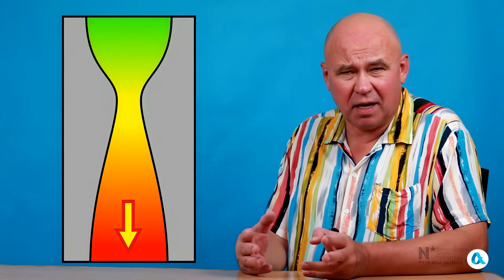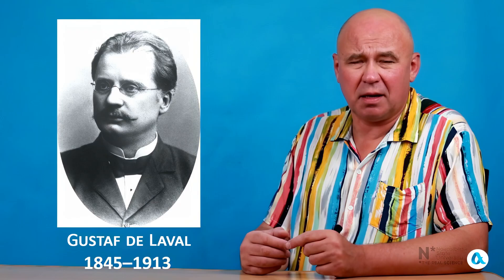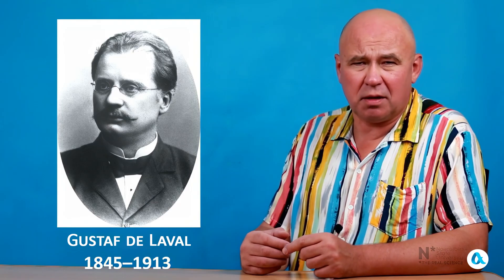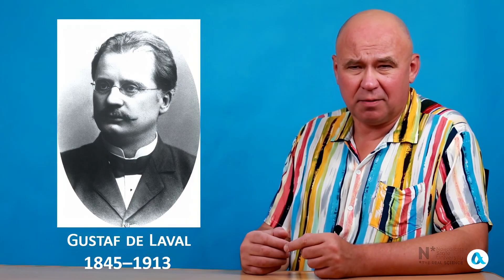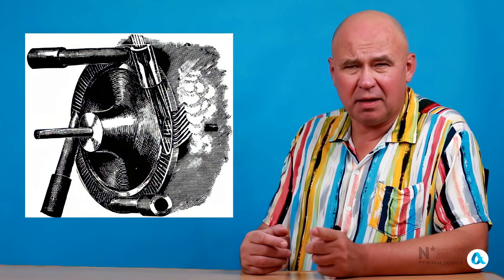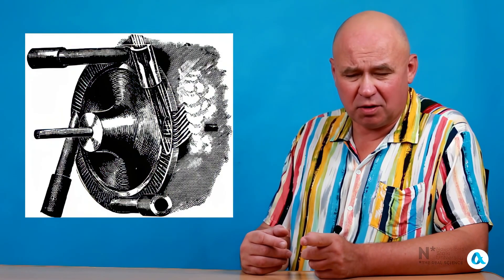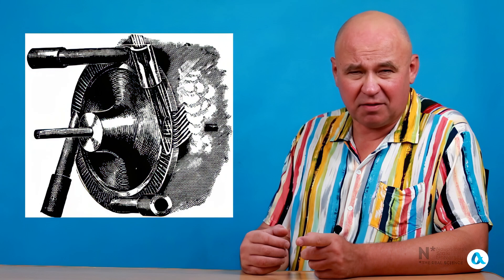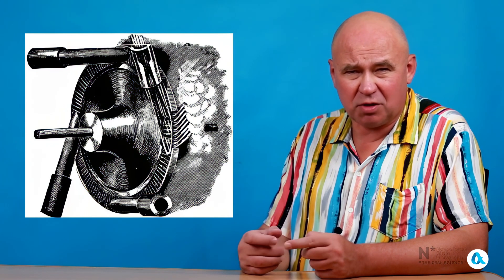This nozzle was invented in 1890 by the Swedish engineer Gustav de Laval. He used it to accelerate steam in his steam turbine. Here you can see an illustration where the nozzles are aimed at the blades of the steam turbine. And if you look closely, you can see the same converging and diverging design.